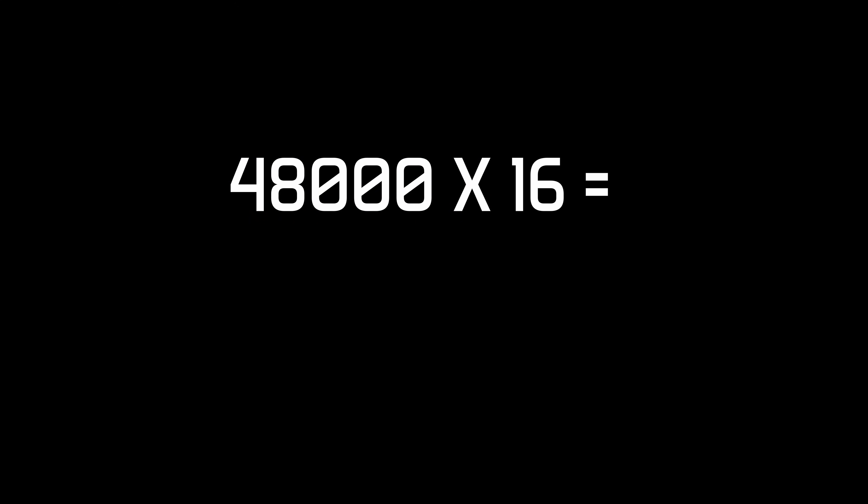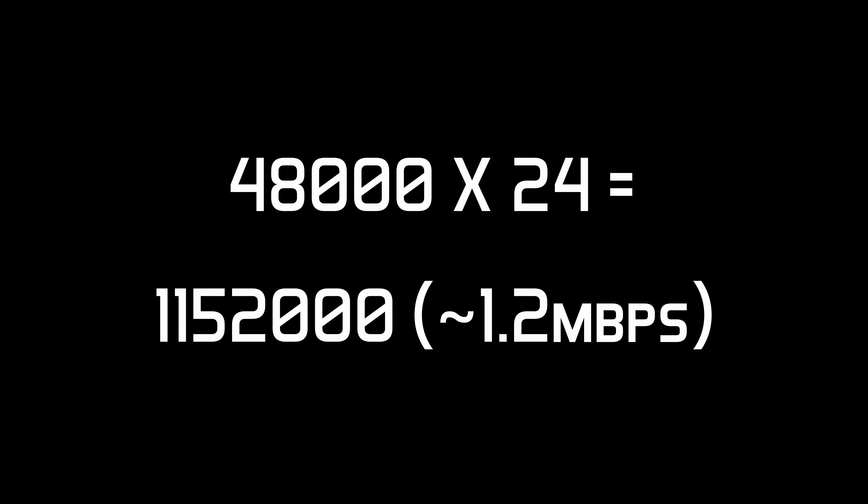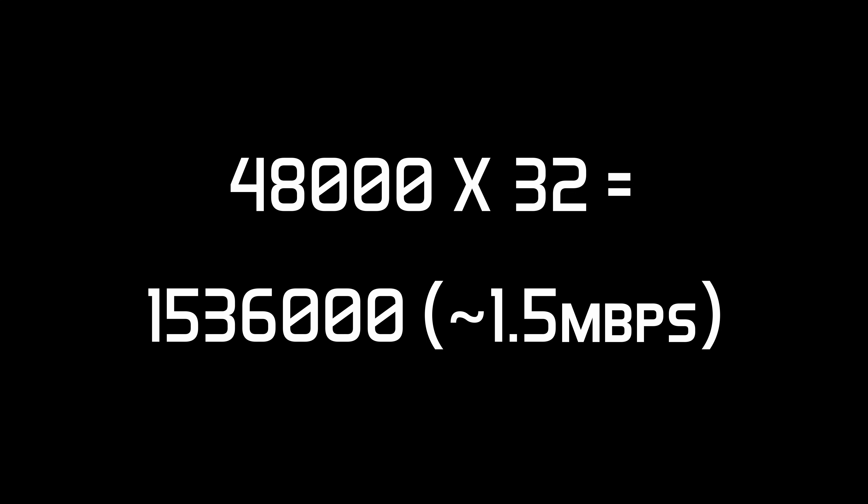One thing to take into consideration is the larger file size — because we're recording more data, it's going to take more space on any storage media we use. We can easily work out the amount of data we're going to use by multiplying the bit depth by the sample rate. Assuming a sample rate of 48 kHz: a 16-bit recording will use 768 kilobits per second, a 24-bit will use 1.2 megabits per second, and a 32-bit recording will use 1.5 megabits per second. Overall it's not a huge change considering the huge benefits that recording to 32-bit brings.